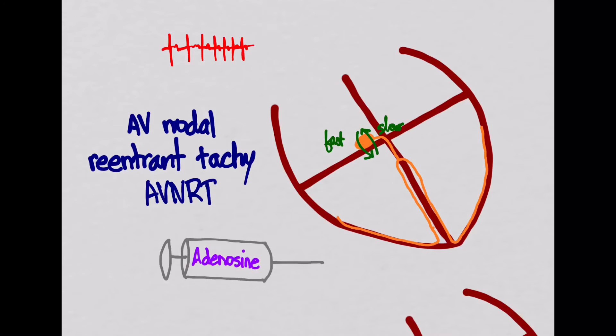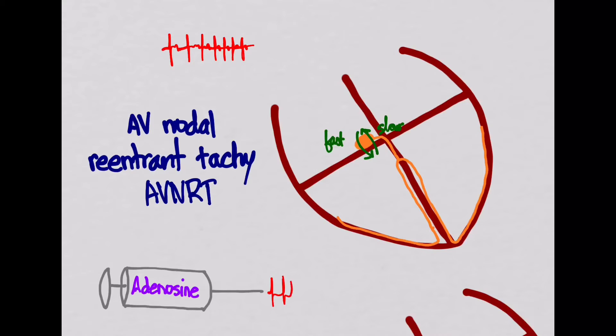What happens with adenosine is that it could actually terminate the tachycardia, and you go back to a sinus rhythm. The rate could be anywhere between 150 and 250 beats per minute.